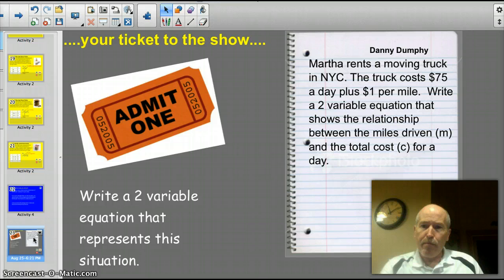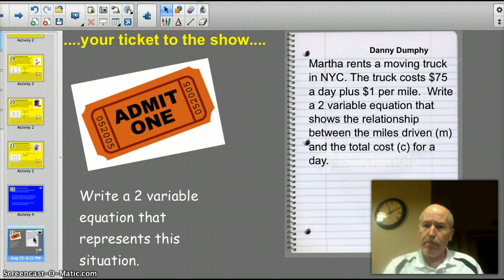Problem about my wife, Martha. Martha rents a moving truck in New York City. The truck costs $75 a day, plus $1 per mile. Write a two-variable equation that shows the relationship between the miles-driven, M, and the total cost, C, to rent that truck for a day. Go ahead and pause it and let you write that down.